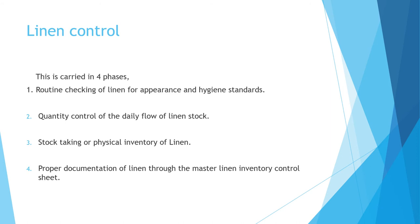The fourth point is proper documentation of linen through the master linen inventory control sheet. The monthly inventory record sheets put together form the master linen inventory sheet, which gives clear figures of condemned linen and linen currently on hand. Any wear and tear caused by staff while carrying linen to the floors can also be mentioned in the master linen inventory sheet.